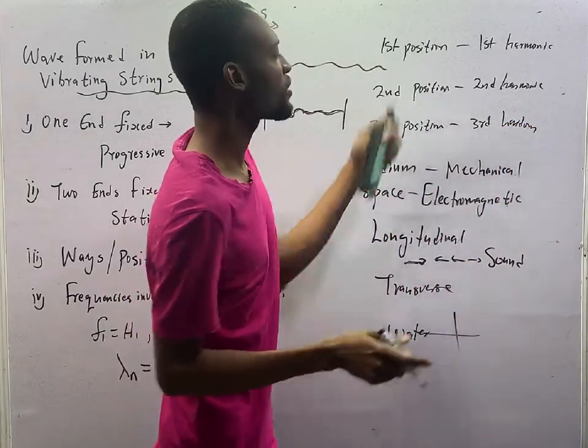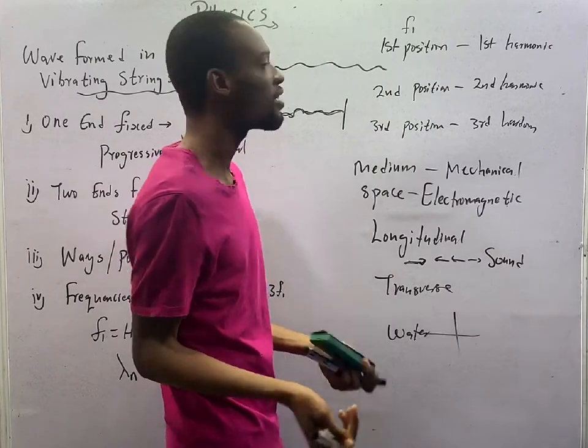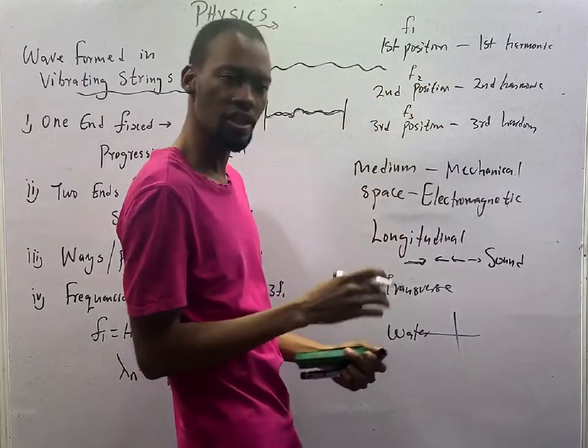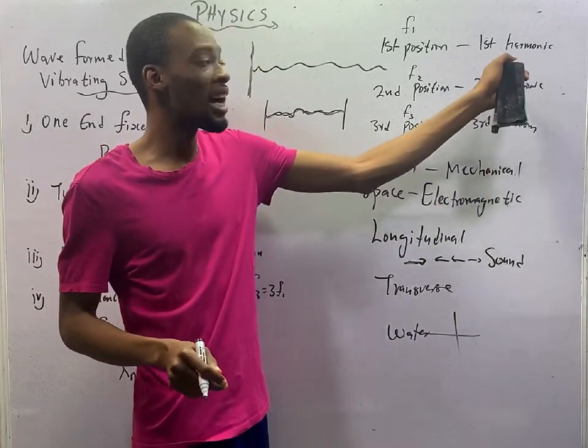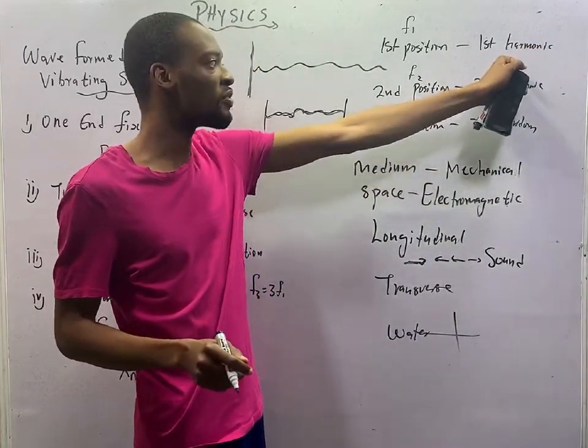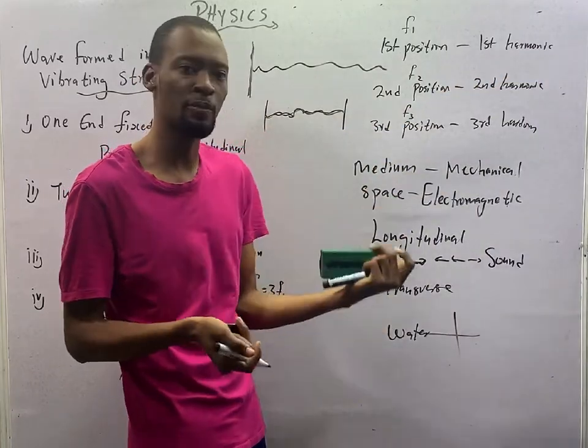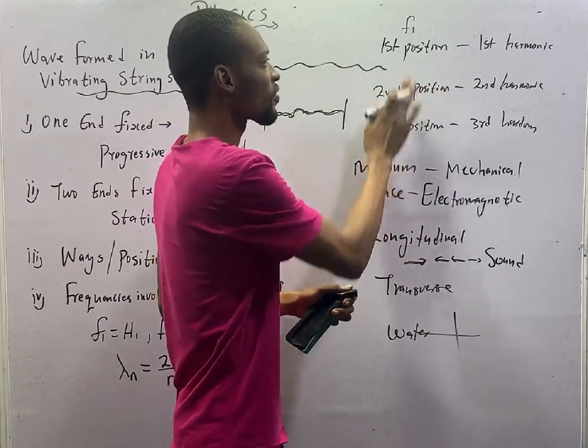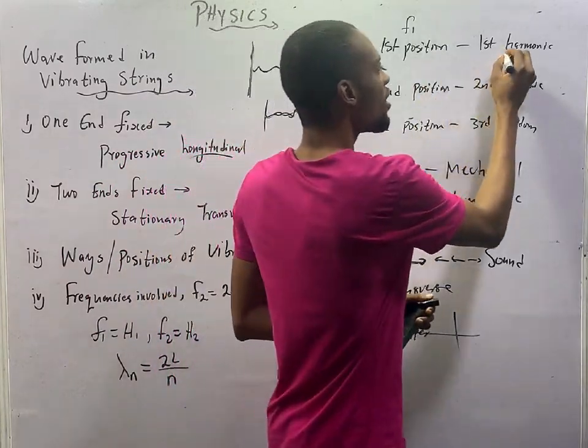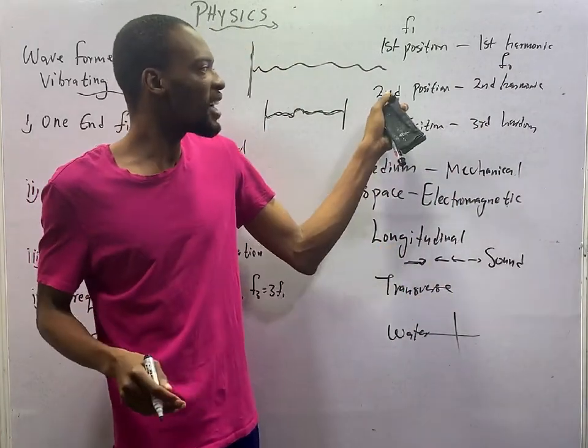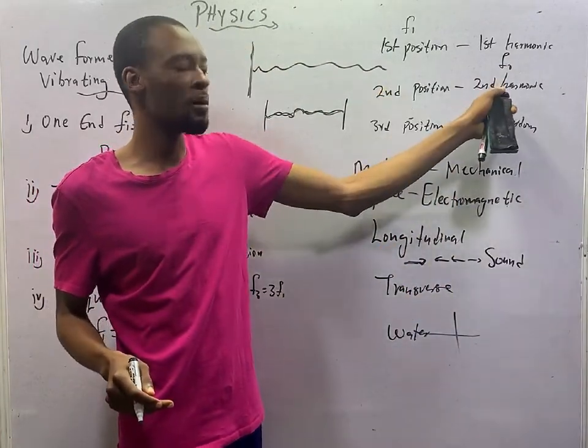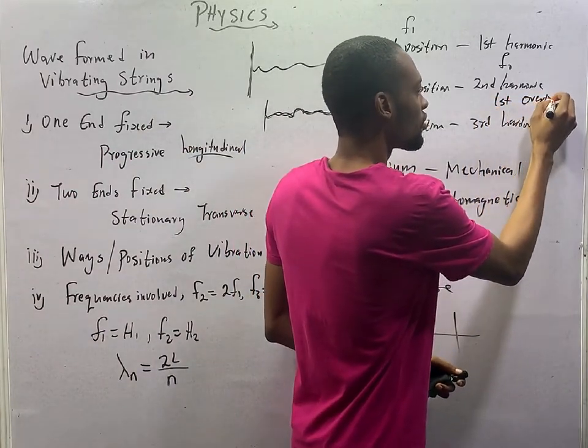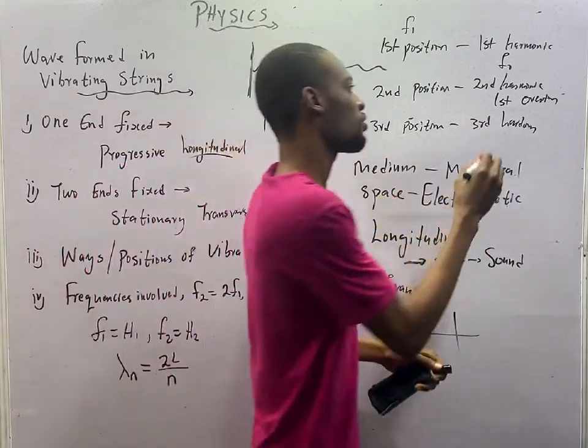This first position is F1, first fundamental frequency. Here, F2. Here is frequency 3. Now look at this. I have said this before. I have discussed it before. And I will still do it again. I will just solve questions under harmonics and overtones. The first harmonic is the fundamental frequency, F1 or F0. The second position, which is the second harmonic, is first overtone. The third harmonic is the second overtone.